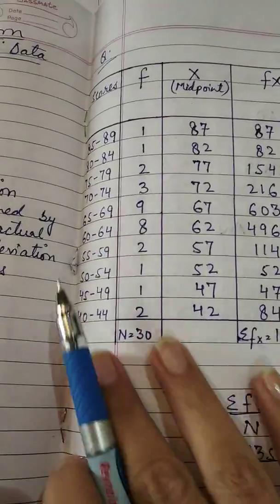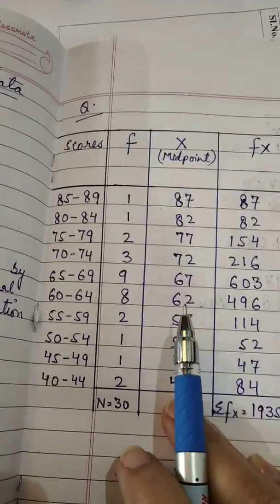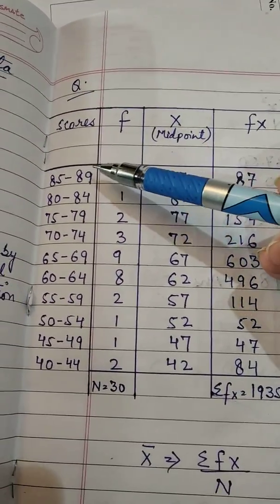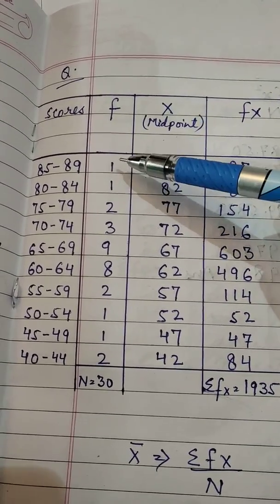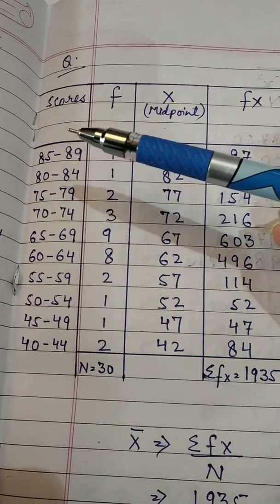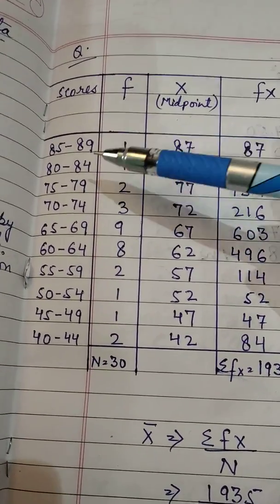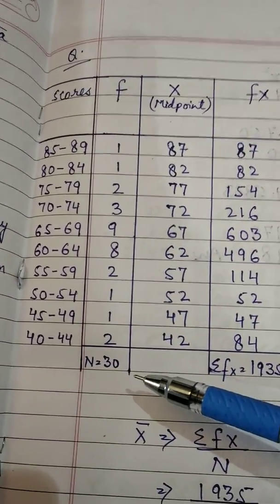So this is an example where we have to calculate standard deviation. So this is the basic frequency of all class intervals. Yahaan tak aapko exam me mila hooga. n is 30.